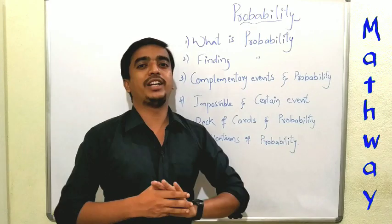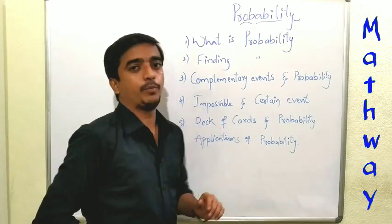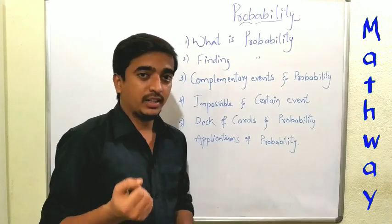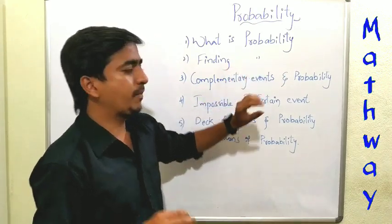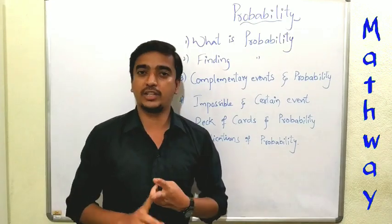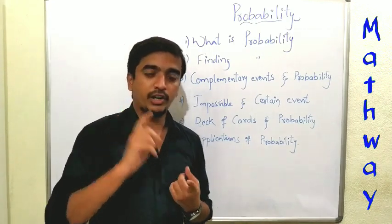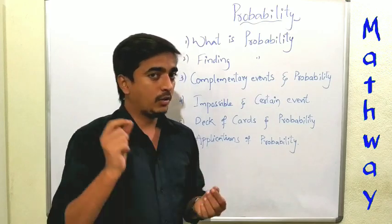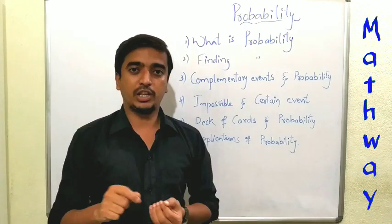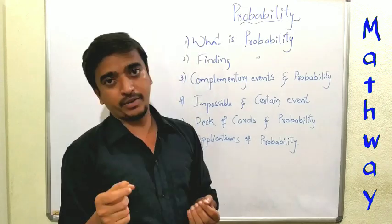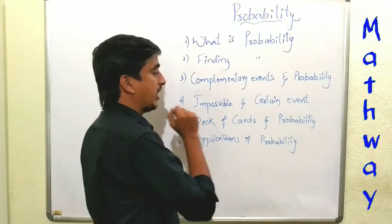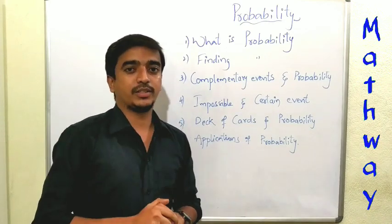Next, deck of cards and probability. Very, very important - probability with dice and deck of cards. What's the probability of getting 2, what's the probability of getting 3? What's the probability of getting even number, prime number, odd number? There are a lot of questions about deck of cards. Deck of cards has in total 52 cards.